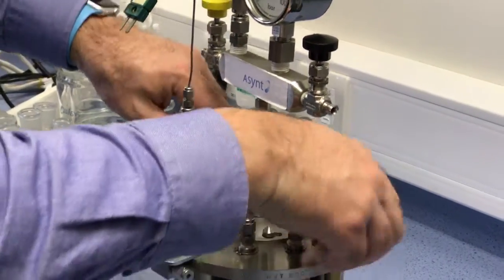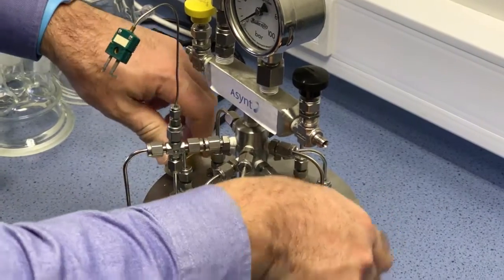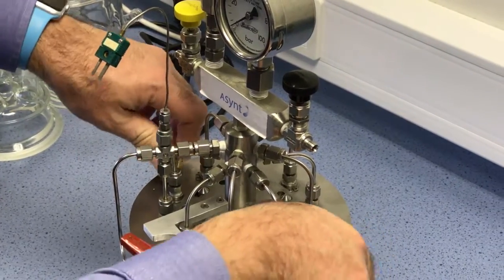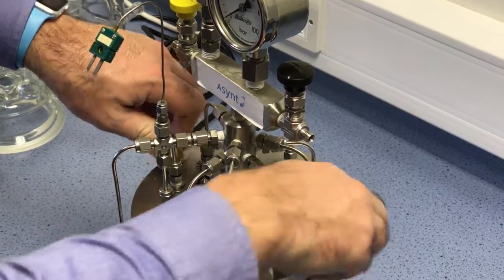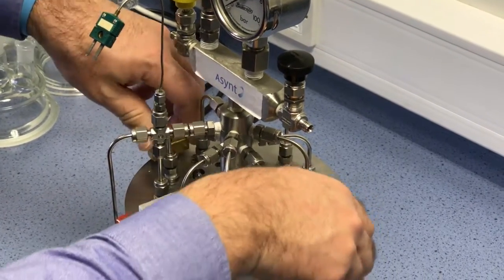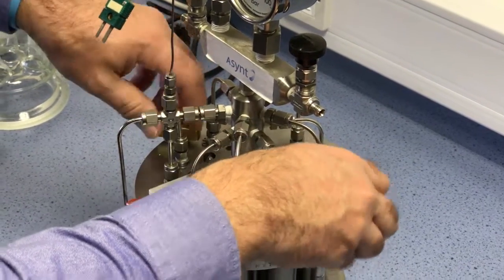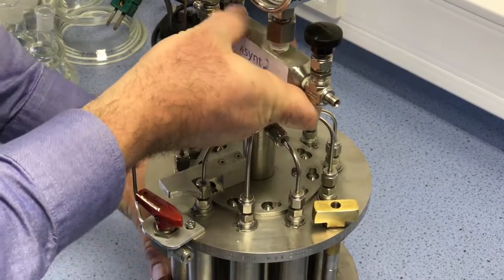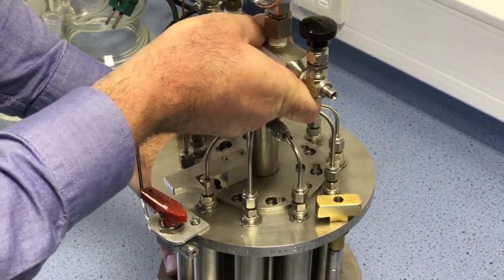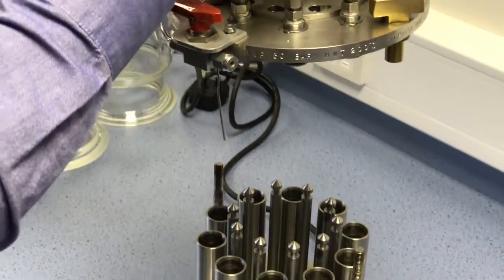Once we're there then we start to evenly unscrew each of the rods until they're both fully unscrewed. We can feel the threads come to an end. Then it's a case of lifting and separating the unit carefully.